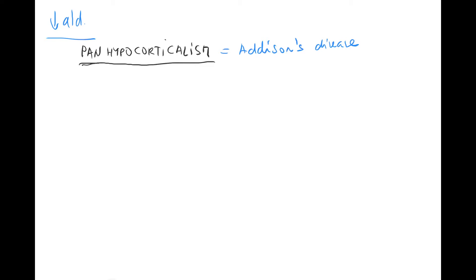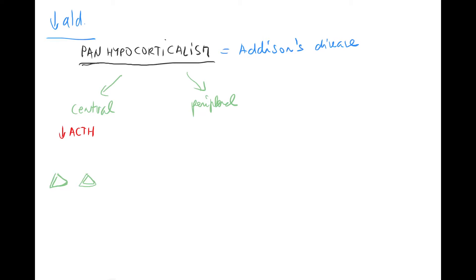This disease has two types: central and peripheral. The central type means there's a problem in the hypothalamus or hypophysis, and ACTH production is wrong — this could be due to trauma, stroke, or bleeding. The levels of ACTH are decreased, so the adrenal glands become smaller and smaller because they don't have the ACTH that supports their function. As a result, cortisol, aldosterone, and sex hormones are all decreased.